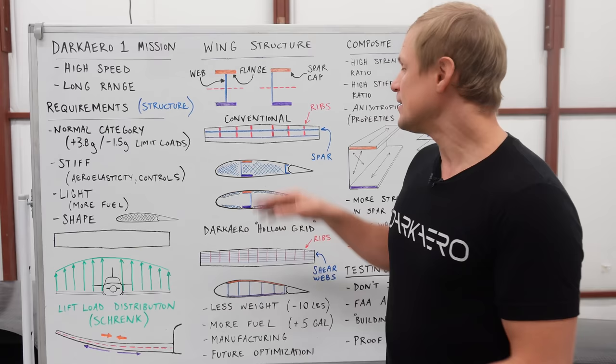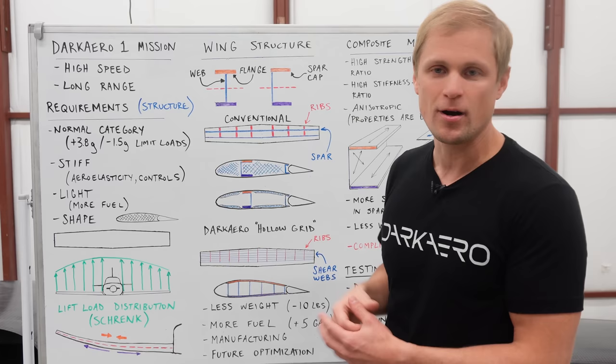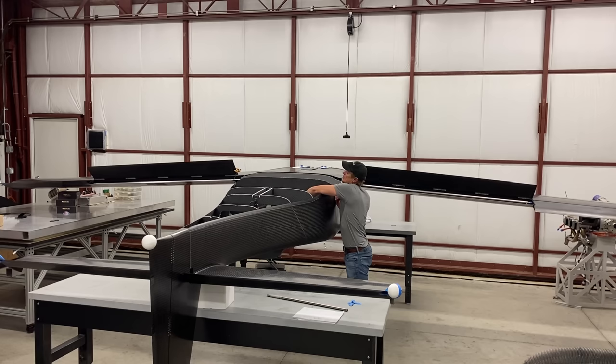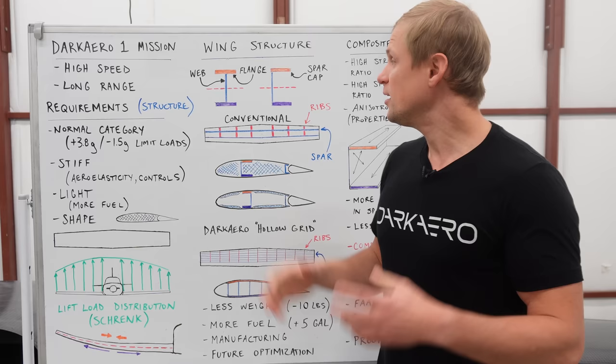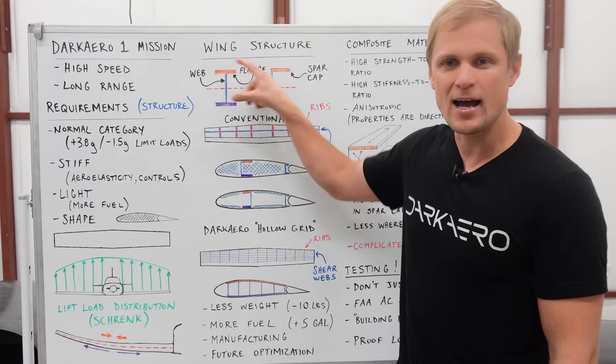Oftentimes you'll see a main spar that's near the thickest portion of the wing, and then sometimes we'll add in an aft spar closer to the trailing edge of the wing, and we can attach control surfaces like flaps or ailerons onto that aft spar. If we're building a spar in a composite wing, oftentimes we'll modify that I-beam cross-section to look more like a C. This is a little bit easier to make out of composite materials.